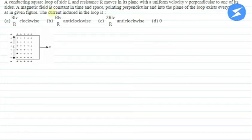Hello everyone, I am your teacher for this question. Let me explain this question to you now. The question is: a conducting square loop of side L and resistance R moves in its plane with a uniform velocity V perpendicular to one of its sides. A magnetic field B constant in time and space pointing perpendicular and into the plane of the loop exists everywhere as in given figure.